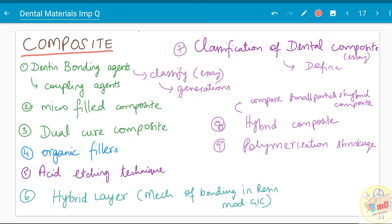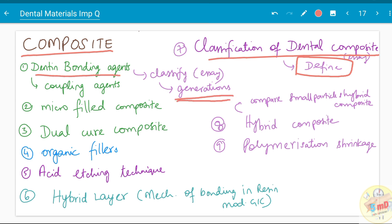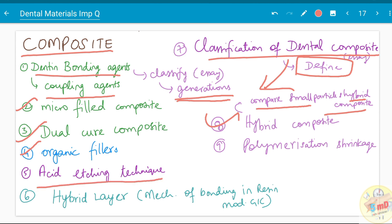The next important chapter is composite. Classification of dental composite is very important and defining dental composite has also been asked. Regarding bonding agents — the generations of dentin bonding agents is a very important topic. Coupling agents, micro-filled composite, hybrid composite — all come under the classification. You should be able to compare small-particle and hybrid composite. Dual-cure composites, organic fillers as components of composite, and acid etching technique — you need to explain the mechanism and the procedure. The hybrid layer — which relates to the mechanism of bonding in resin-modified GICs — what it forms, when it forms, and its properties.